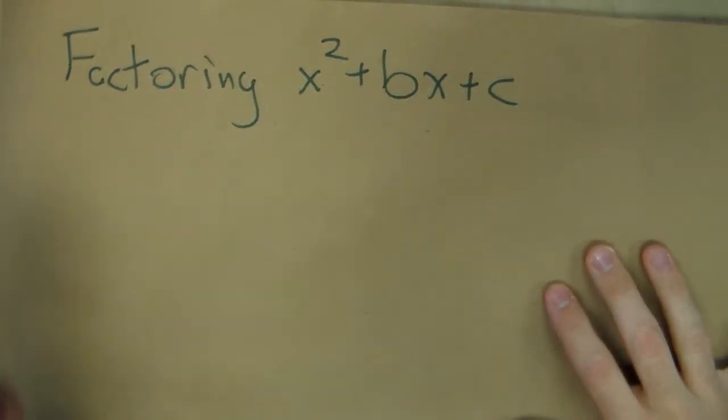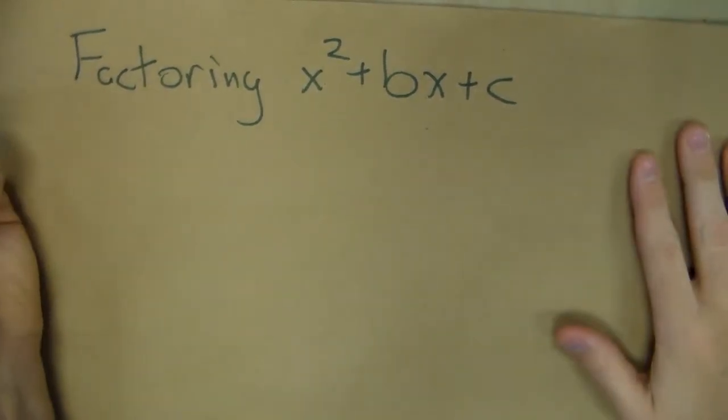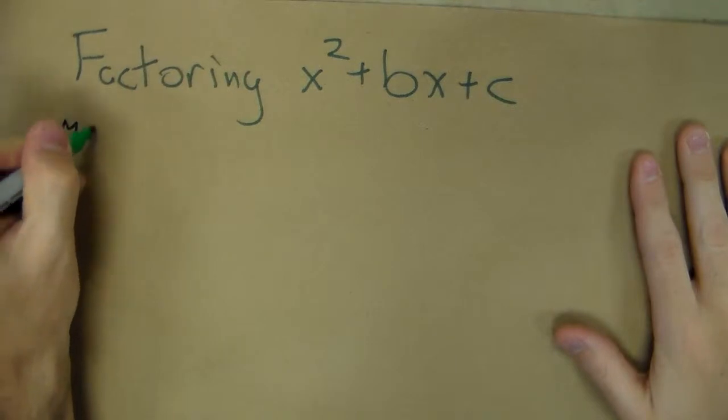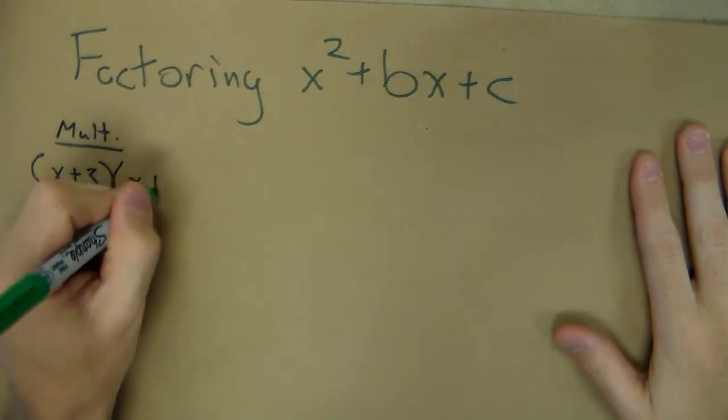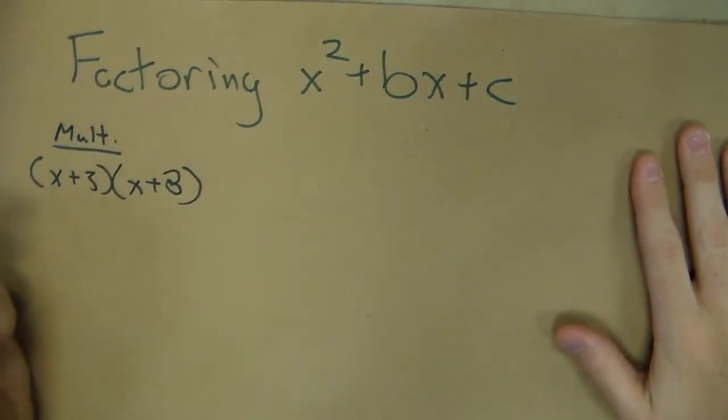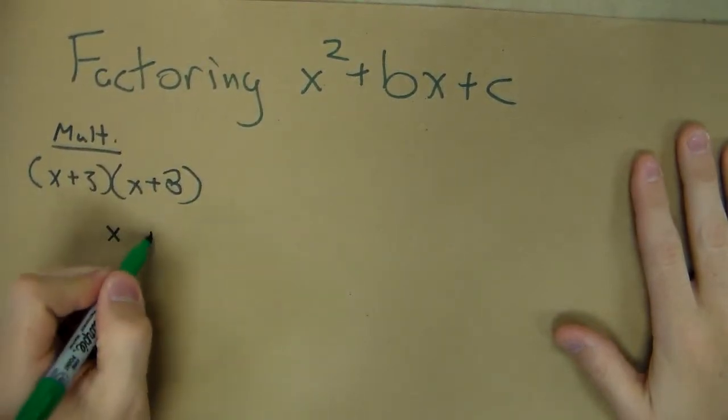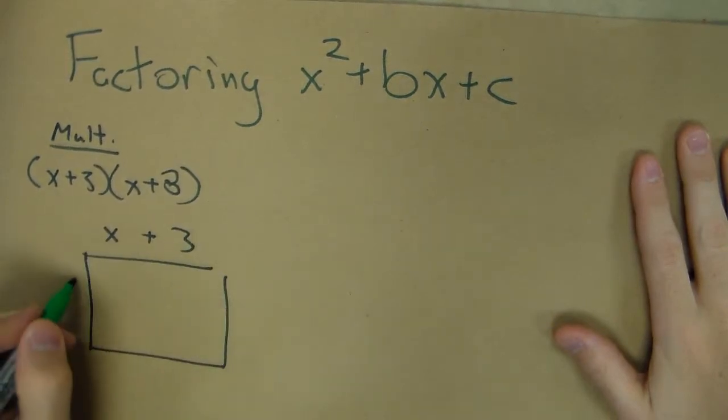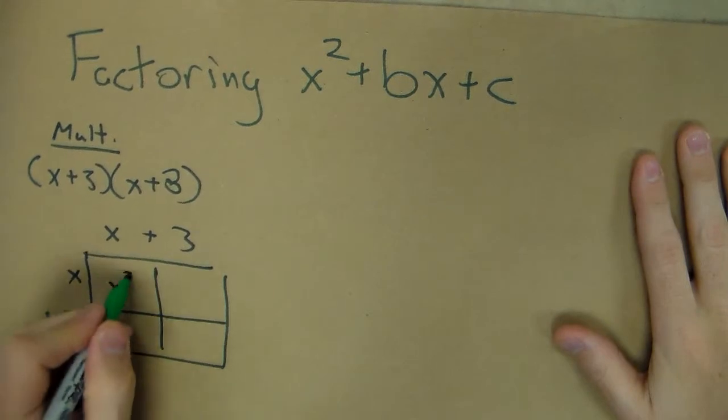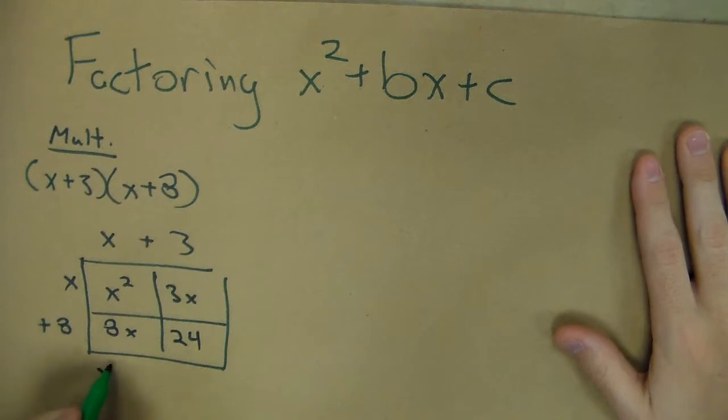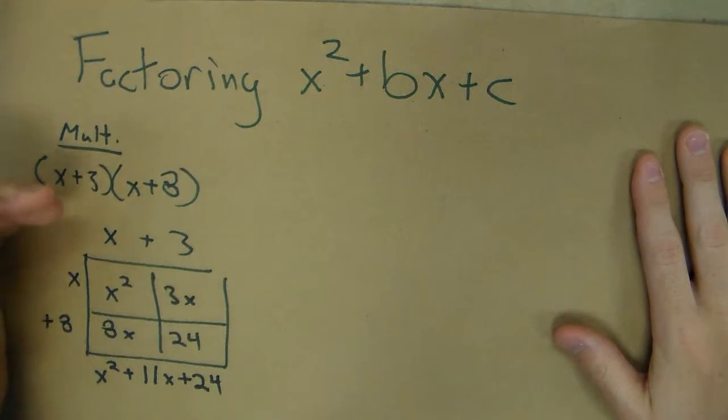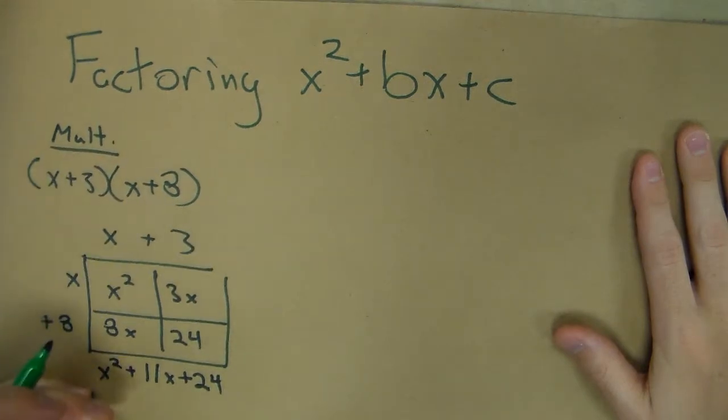If we want to factor x² + bx + c, that's really the opposite of multiplying. So let's first look at multiplying binomials. If I had (x+3)(x+8) and multiplied those using a box method, I get x² + 3x + 8x + 24, so x² + 11x + 24. So I start with two binomials and get to that trinomial.